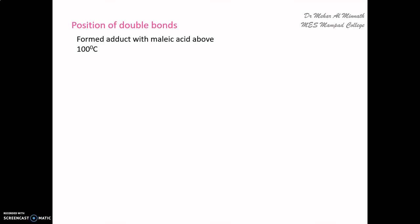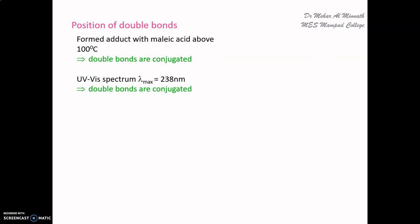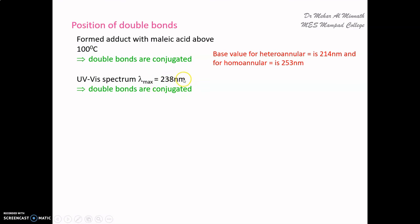For the position of the two double bonds: abietic acid formed an adduct with maleic acid at 100°C, indicating the double bonds must be conjugated. The UV-visible spectrum of abietic acid showed an absorption peak at 238 nm. The base value for heteroannular conjugated double bonds is 214 nm and for homoannular is 253 nm. Since the observed λmax is 238 nm, consistent with the heteroannular base value, the double bonds must be heteroannular — located in rings B and C.